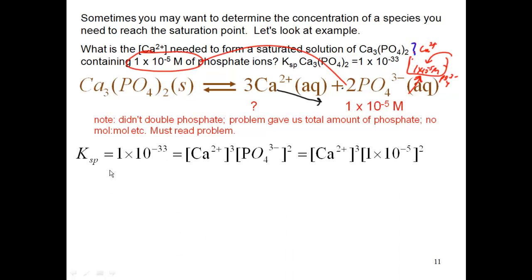So continuing on with the problem, we know that Ksp is equal to 1×10⁻³³, which is equal to the concentration of calcium cubed — accounting for that coefficient — times the phosphate concentration squared, accounting for the 2 in my relationship. That gives me the calcium concentration cubed times the concentration of phosphate, which we know is 1×10⁻⁵, and that value is squared.